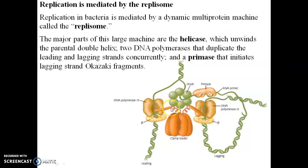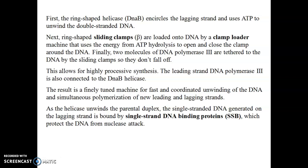In the primosome, primers are needed to initiate with a short RNA primer. The replisome contains helicase which unwinds the two parental double helices, then the two DNA polymerase III — one on the leading strand and one on the lagging strand — and a primase that initiates DNA replication. DnaA protein binds first, followed by DnaB which encircles the lagging strand and uses ATP to unwind the double-stranded DNA. The beta sliding clamp, which is a ring-shaped clamp, is loaded onto the DNA by the clamp loader using ATP to open and close the clamp. DNA polymerase III is the polymerizing enzyme, and the clamp keeps DNA polymerase without falling off, allowing high processivity.